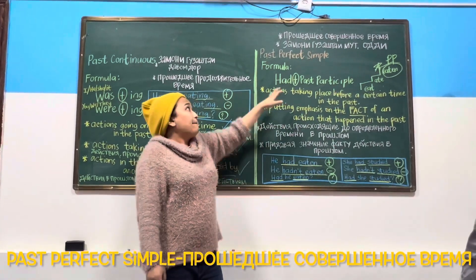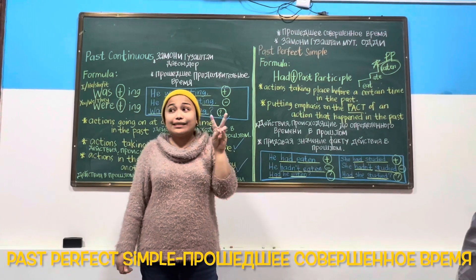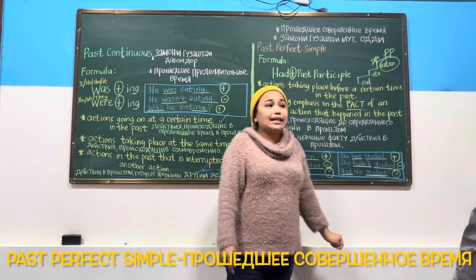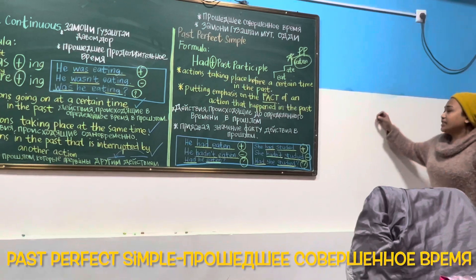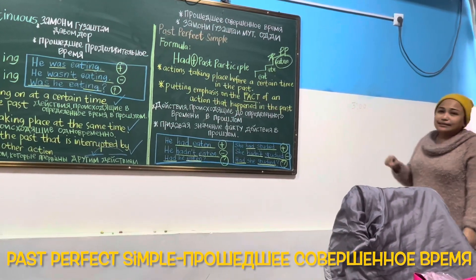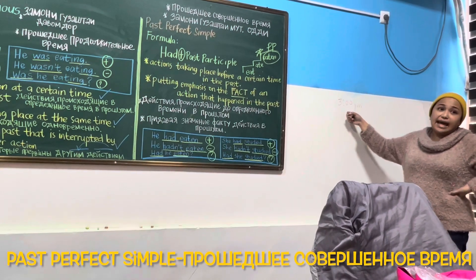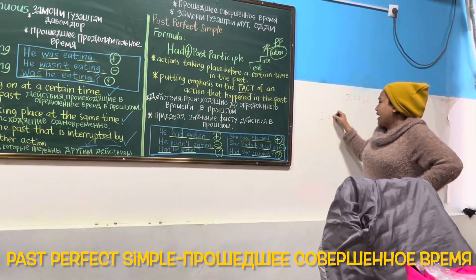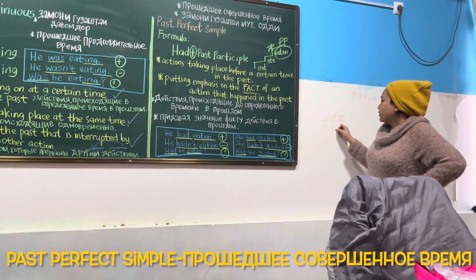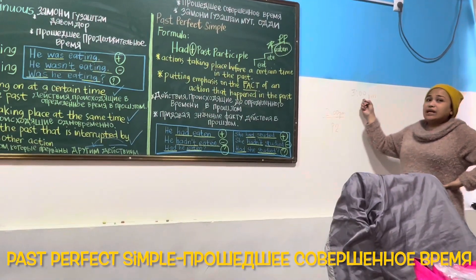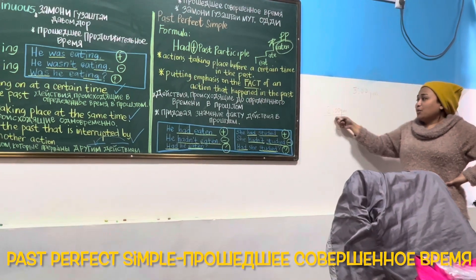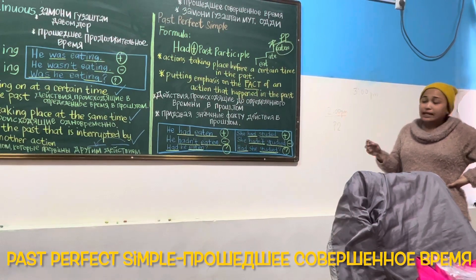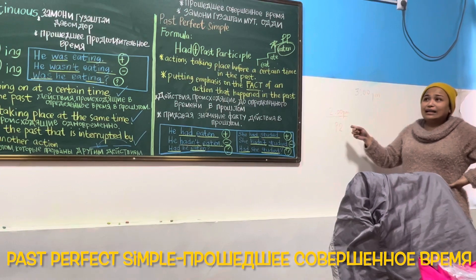We use past perfect only for two things. The first one: actions taking place before a certain time in the past. For example: right now it's 3pm — that is your present. 2pm is your past. Did you understand? This is zamoni guzashta — the past.